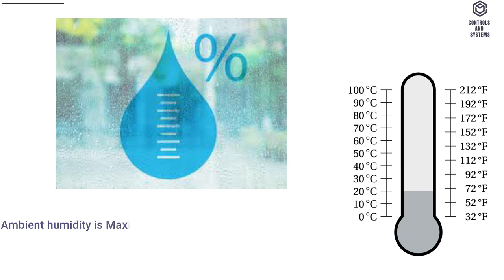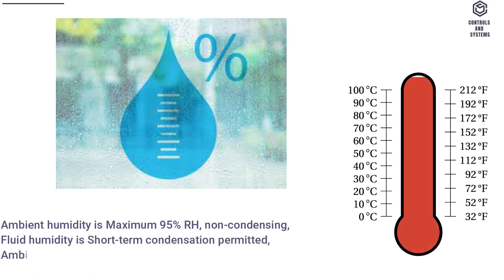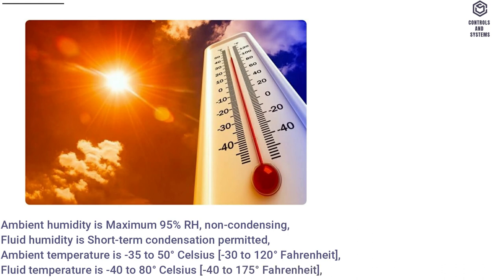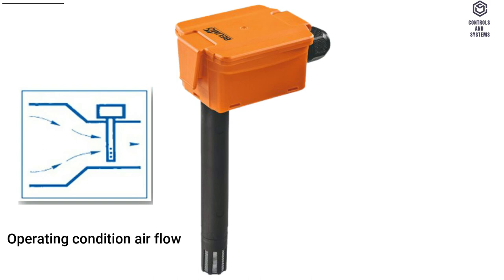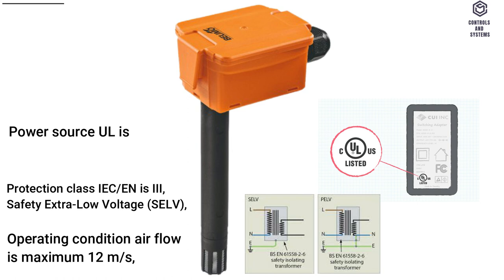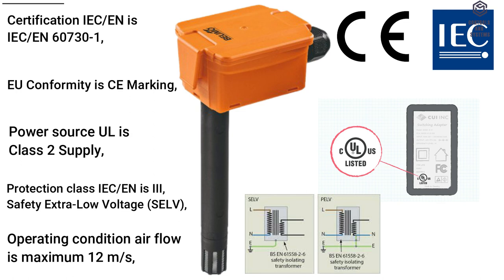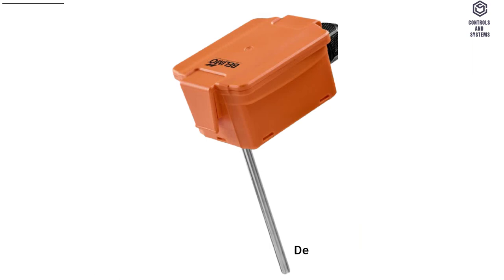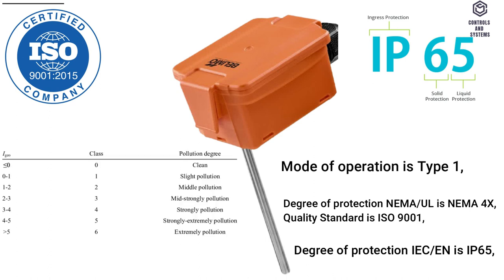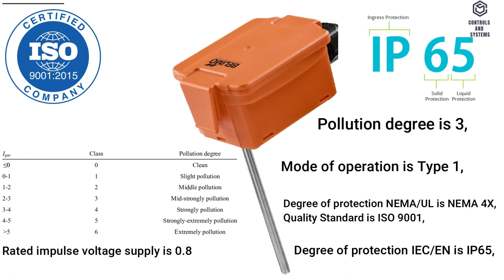Safety Data: Ambient humidity is maximum 95% RH non-condensing. Fluid humidity: short-term condensation permitted. Ambient temperature is −35 to 58°C (−30 to 128°F). Fluid temperature is −40 to 88°C. Operating condition air flow is maximum 12 m/s. Protection class IEC N3, safety extra-low voltage (SELV), power source class 2 supply. EU conformity marking. Certification IEC 60731. Degree of protection IP65. Degree of protection NEMA UL is NEMA 4X. Quality standard is ISO 9001. Mode of operation is Type 1. Pollution degree is 3. Rated impulse voltage supply is 0.8 kV. Construction is independently mounted control.